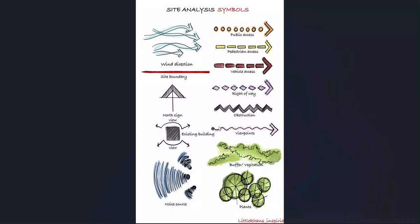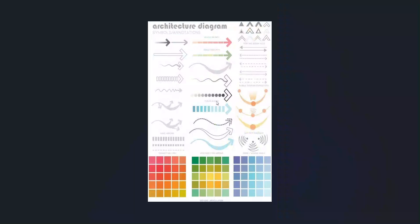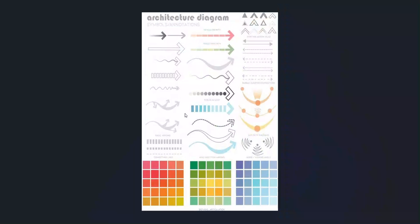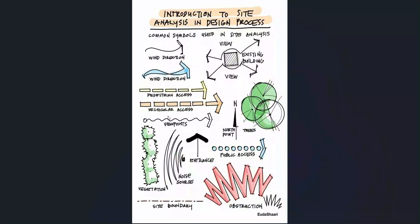If we need to have clear views, are there anything creating obstructions? Also vehicle, pedestrian, or public access. Having these different types of symbols can really help identify things better. These symbols could vary, but they all have the same understanding.